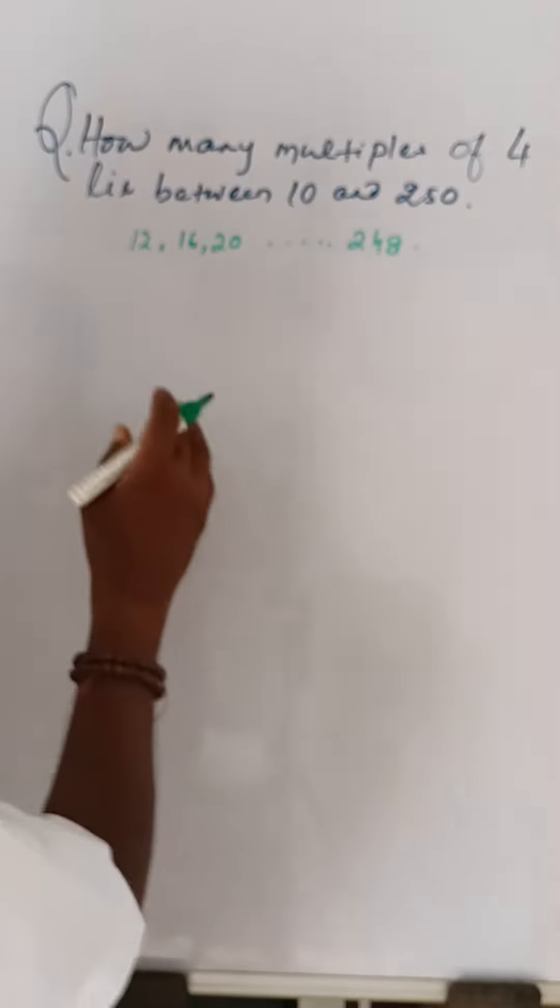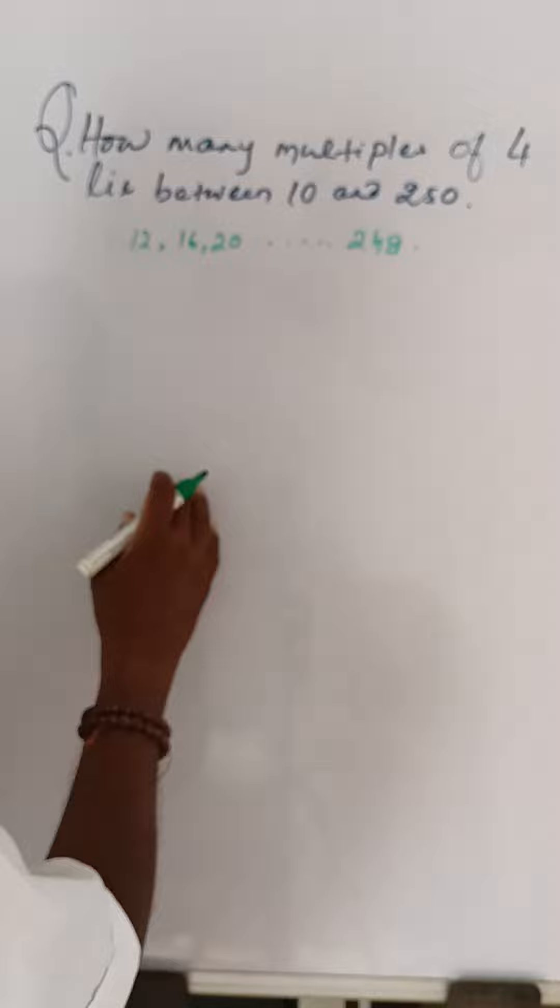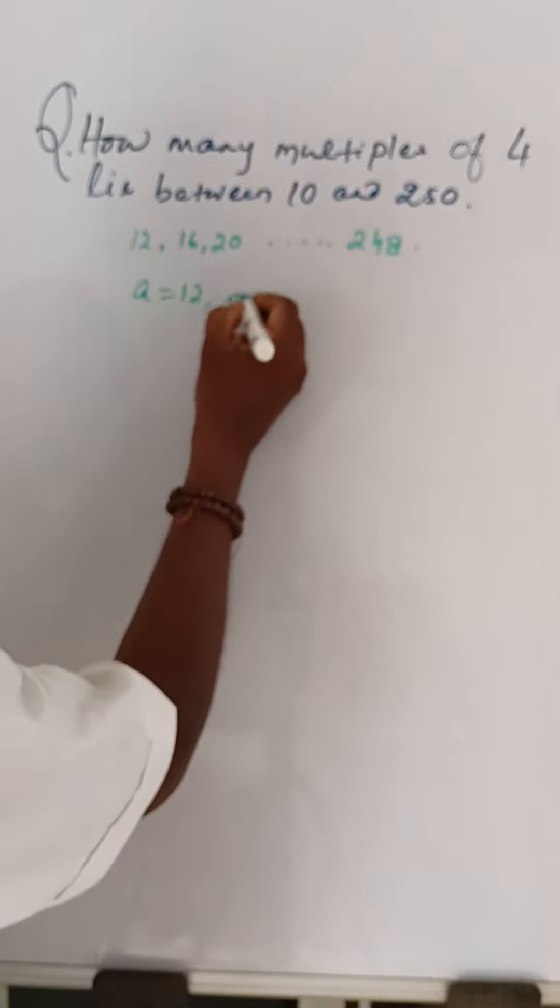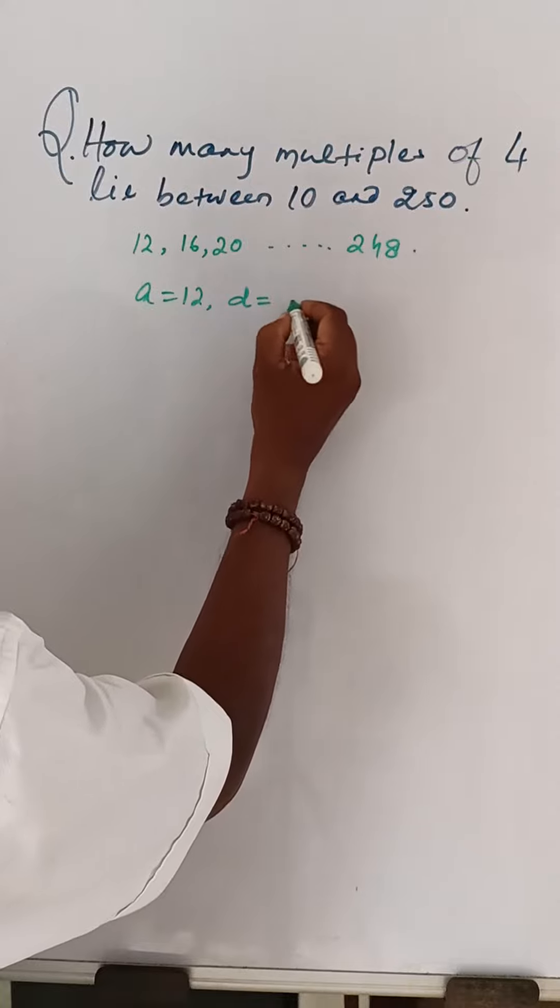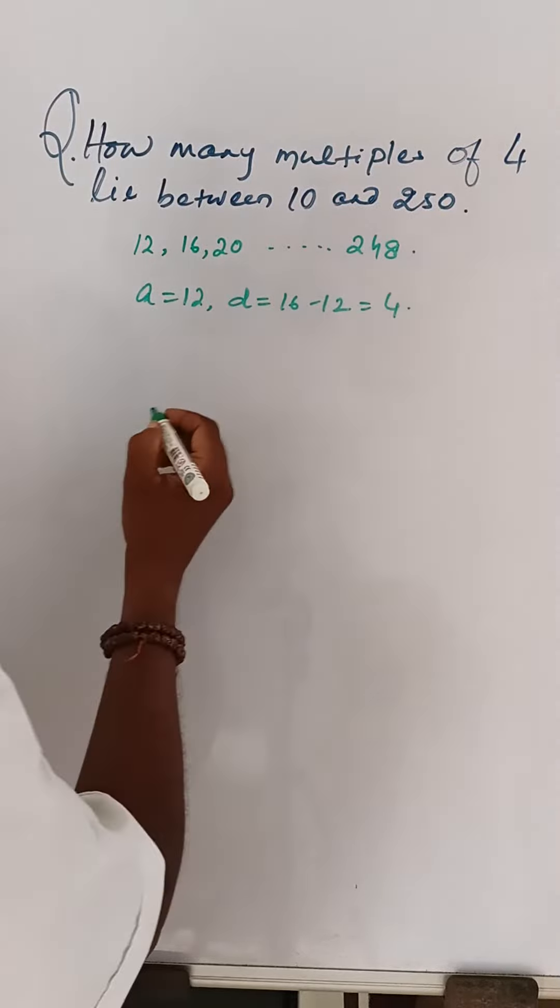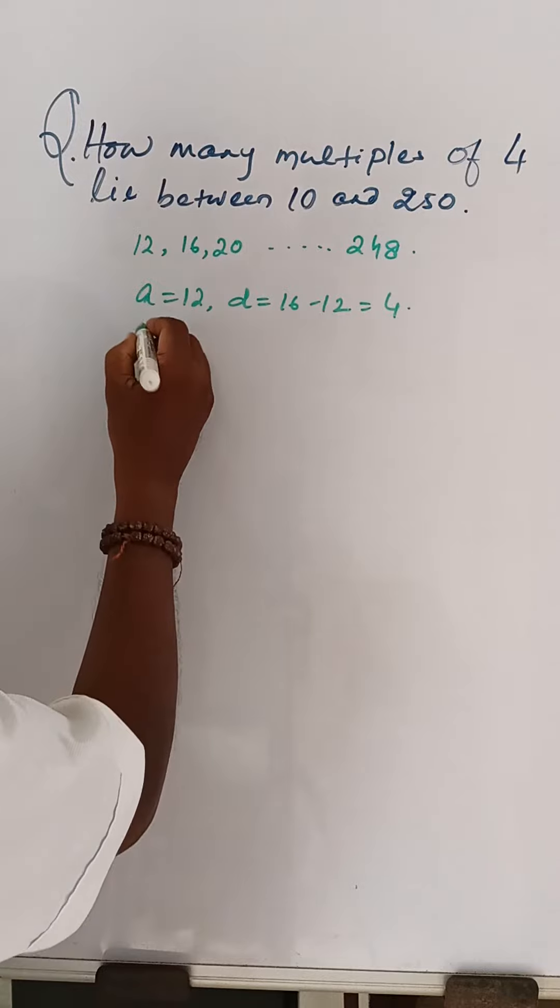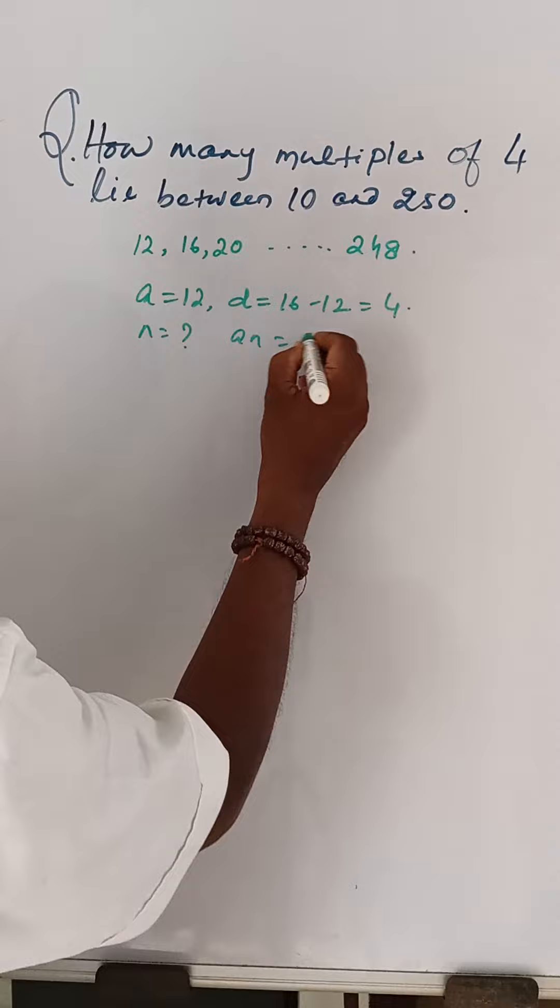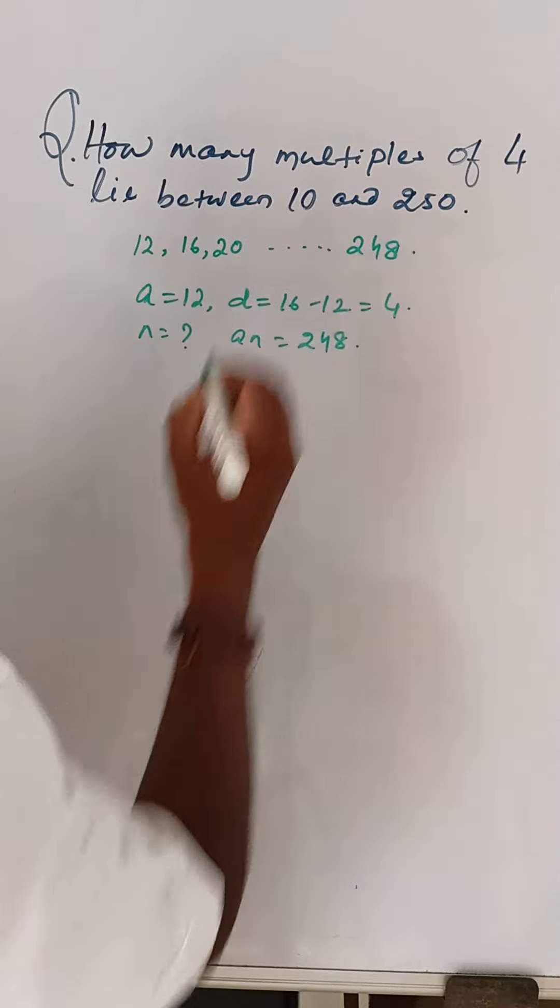Clearly, these numbers form an AP. So, A is equal to 12, D is equal to 16 minus 12, that is 4, and N is question mark, and AN is equal to 248.